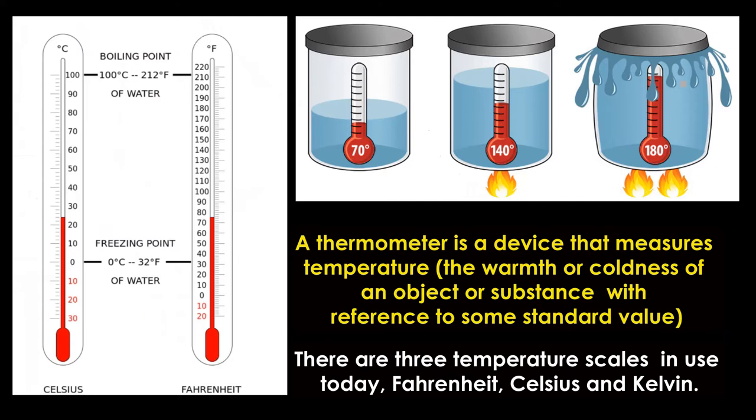So, what is a thermometer? A thermometer is a device that measures temperature, the degree of hotness and coldness of substance. There are three temperature scales in use today: Fahrenheit, Celsius and Kelvin.